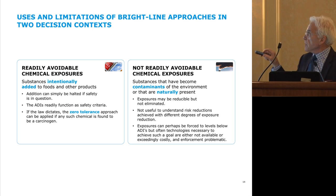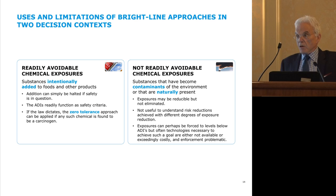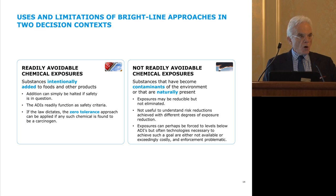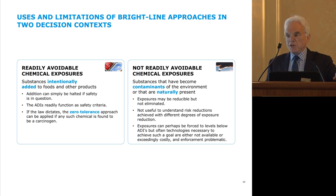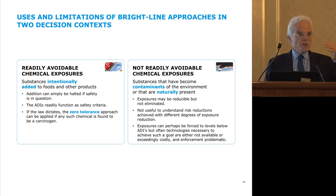For contaminants — widespread contaminants of the environment, from aflatoxins to PCBs to dioxins to heavy metals — exposures may be reducible but really cannot be eliminated without cutting off the sources, and that takes a long time for many widespread environmental contaminants. The bright-line model is not useful for understanding risk reduction achieved with different degrees of exposure reduction. We'd like to know: if we take an intervention or mitigation action, how much risk reduction are we achieving? Just drawing a bright line for such materials is not a very helpful way to solve this problem.